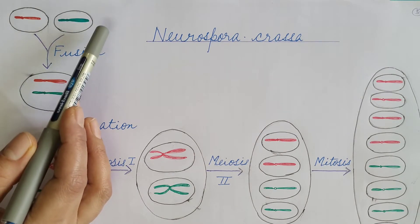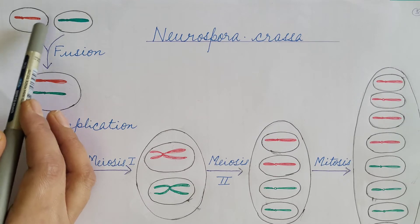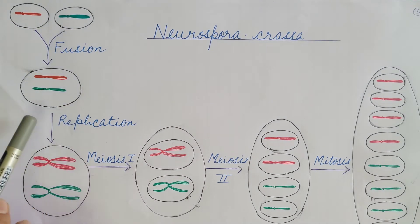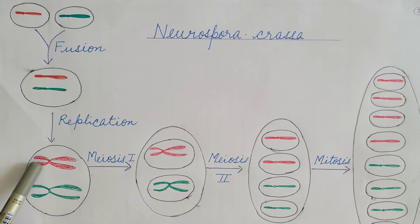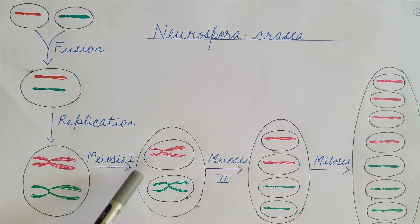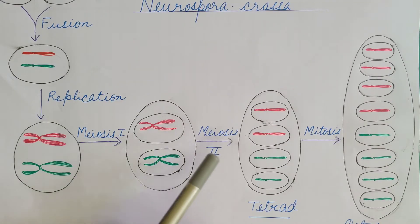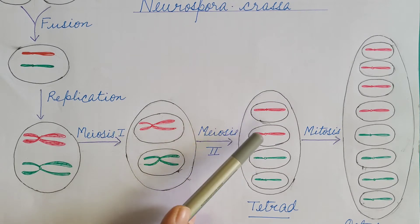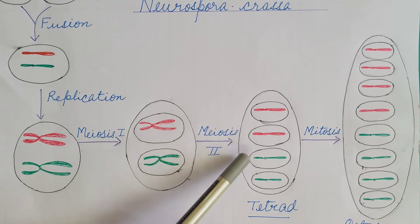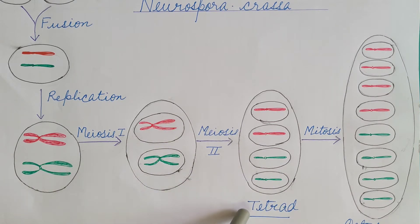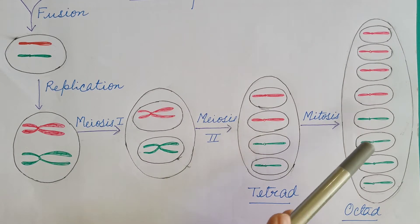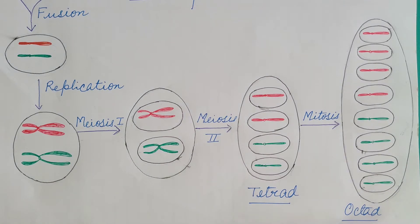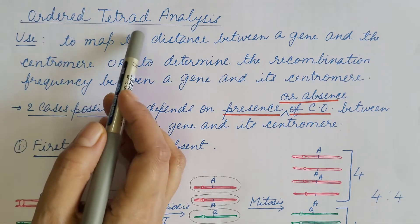Two haploid cells (1N), each having only one set of chromosomes — for convenience we have taken only one chromosome — fuse to produce a diploid zygote. Then chromosomal replication takes place; each chromosome now has two chromatids attached to the centromere. Meiosis I takes place and the two chromosomes separate, followed by meiosis II where each sister chromatid separates. We get four haploid cells known as spores contained in a sac-like structure, also known as tetrad. This is then followed by mitosis, producing eight haploid cells in the ascus, also known as octad.